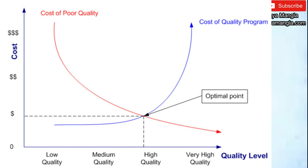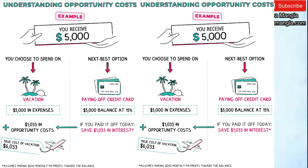Now let's take a common example of opportunity cost. Assume you have $5,000 and you have two options: one is you can go on vacation and enjoy, and the second is you have a credit card payment to make of $5,000. If you choose vacation instead of paying the credit card, the opportunity cost is not only $5,000 — there is also a penalty in the form of interest, which is approximately $1,000. So the total opportunity cost is more than $6,000 that you are effectively spending by not paying off the credit card.